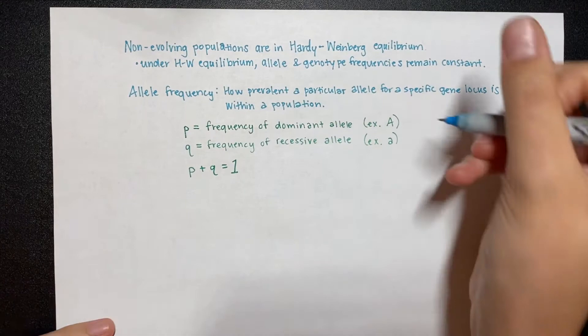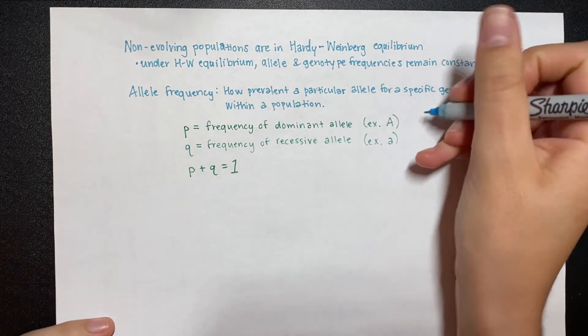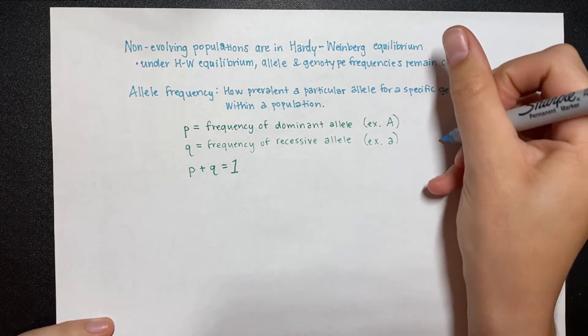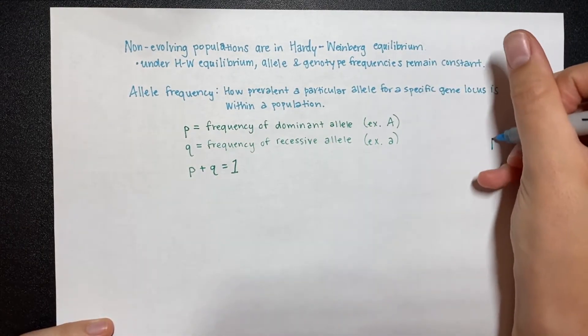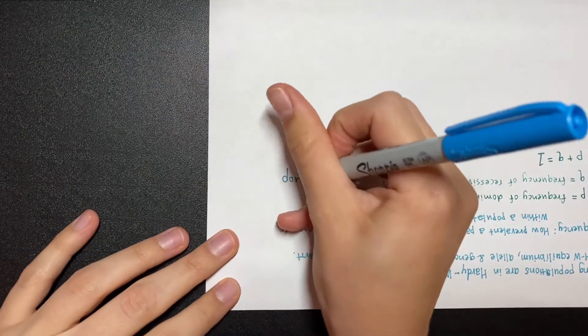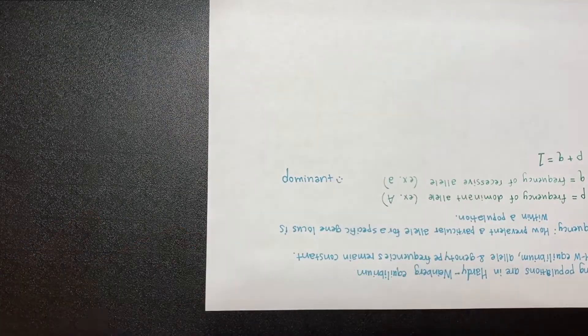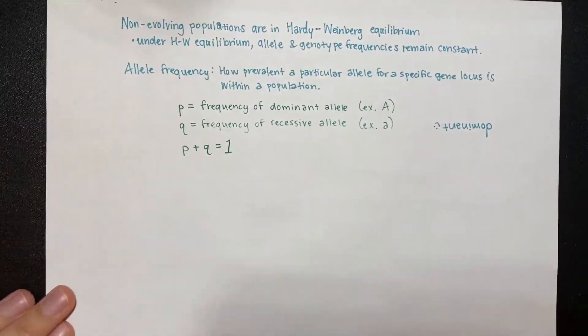One way to remember that p always represents the dominant allele is that if you write down the letter p and then flip it upside down, it forms a d for dominant.